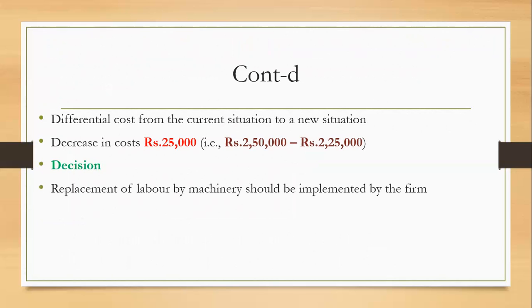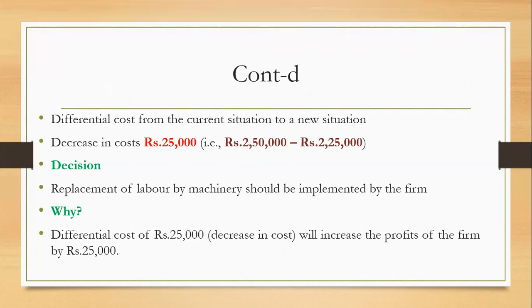The decision here would be replacement of labor by machinery should be implemented by the firm as the cost is decreasing. Why? Differential cost of rupees 25,000 will increase the profits of the firm by 25,000.